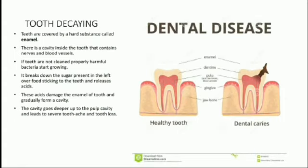In the given diagram you can see the first diagram shows a healthy tooth, and the second one shows how a cavity has started forming. You can see the enamel followed by the dentine, then the reddish area which is the pulp, then the gingiva, and then the jawbone.